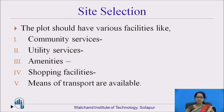The plot should have various facilities. Community services include police stations, fire protection services, and cleaning services such as waste disposal and street cleaning. Utility services include daily utilities like water supply, gas, electricity, and telephones. Amenities include schools, colleges, hospitals, etc. Shopping facilities are also an important factor, and means of transport should be available for easy and quick communication.